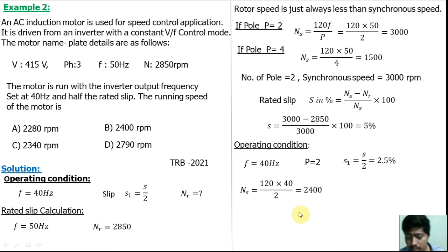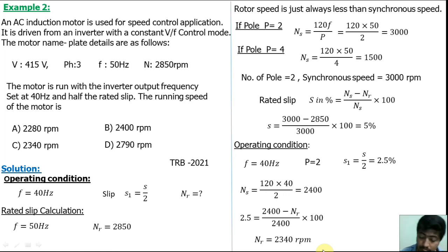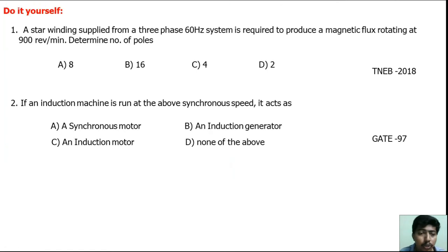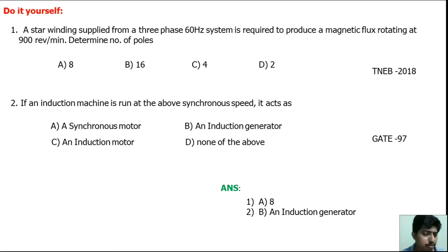Using the slip formula: slip = (Ns − Nr) / Ns, with slip = 2.5% and Ns = 2400 rpm, we get: 0.025 = (2400 − Nr) / 2400, giving Nr = 2340 rpm. So option C is correct. Two practice questions are given — the first from TNV 2018 and the second from GATE 1997. The answers are: first question option A, second question option B. The next part two video will cover the second important concept.